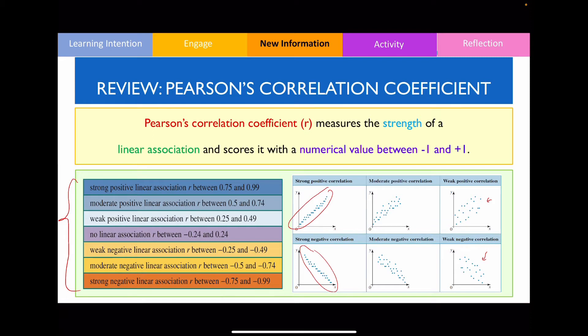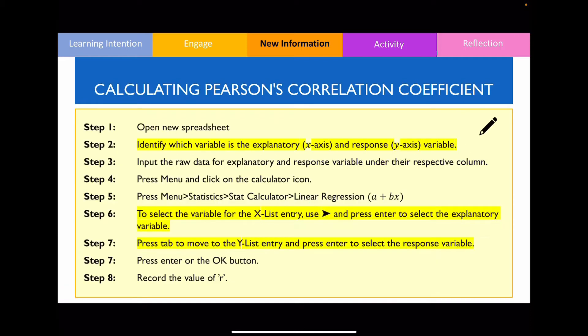In order for us to work out and identify what is Pearson's correlation coefficient, we need to follow a number of steps which is outlined in this particular slide over here. To find out Pearson's correlation coefficient, you will need the CAS calculator and you will therefore need to follow all these 8 key steps in order to get to your final answer.